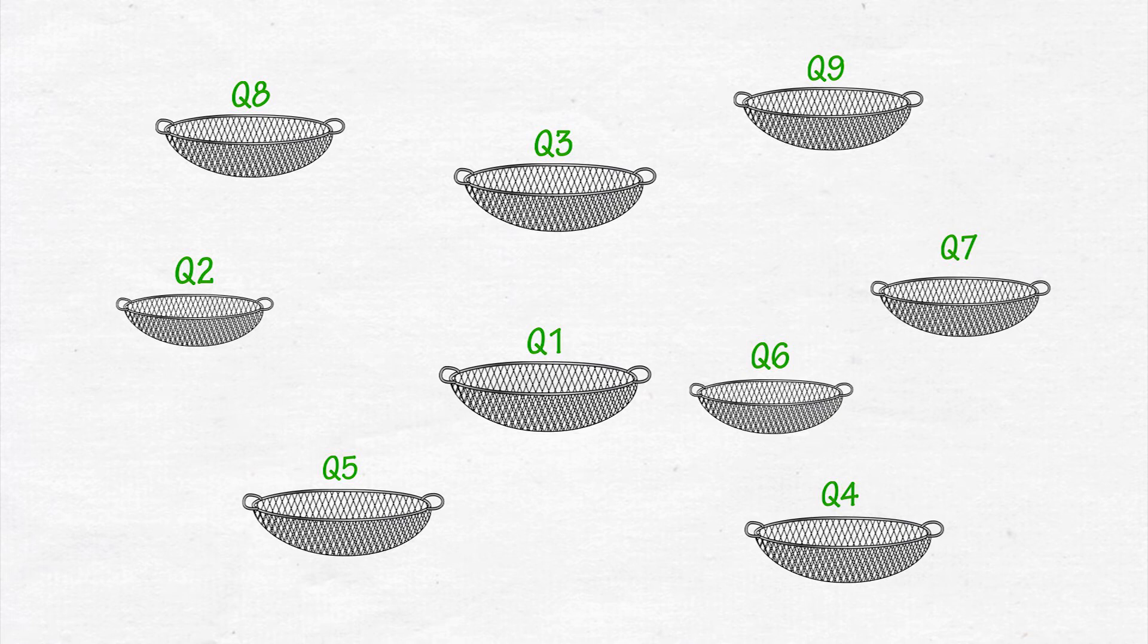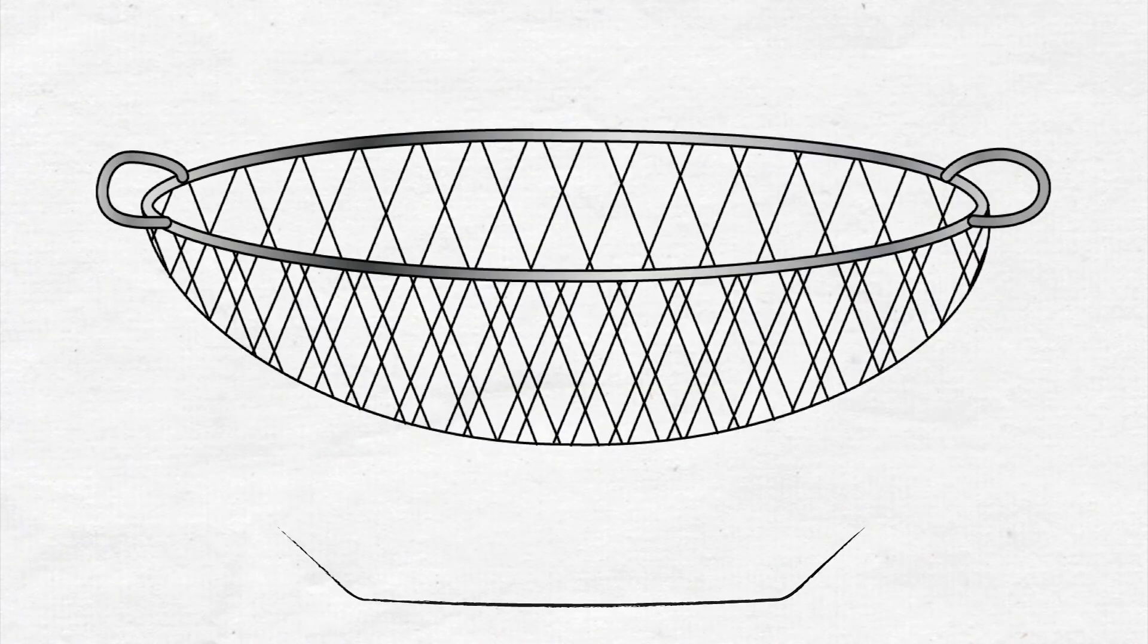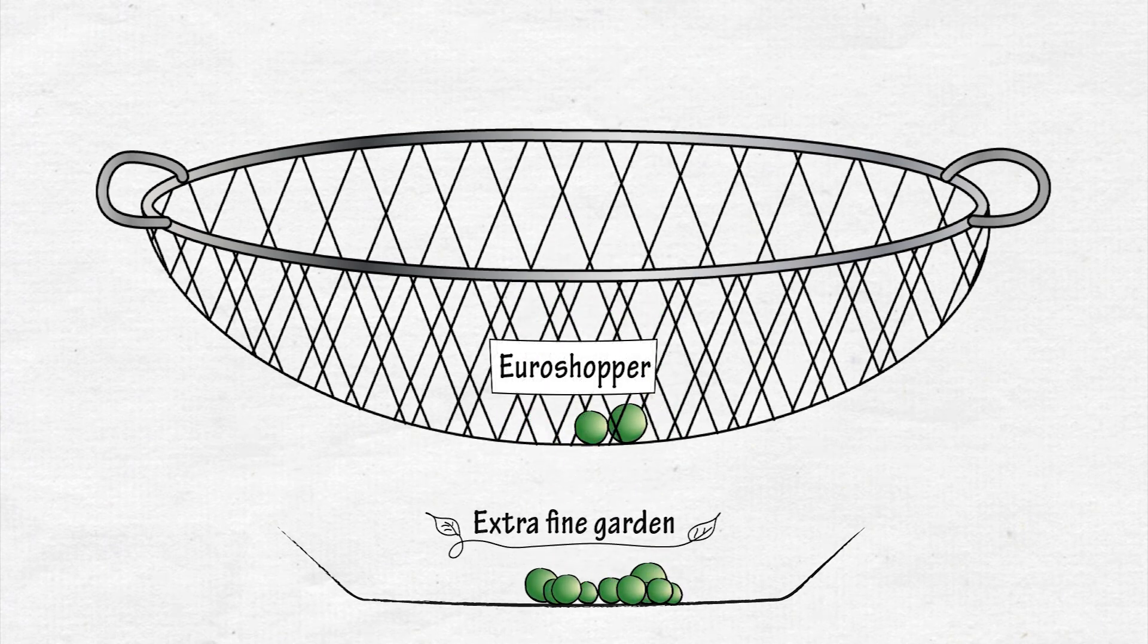But there is another aspect to the quality of our measurement instrument which is not captured by these calculations, and that is whether it measures what we want to measure. If the holes in the sieve are too wide, larger peas will fall through as well, and you will have problems selling the whole lot as extra fine garden peas.